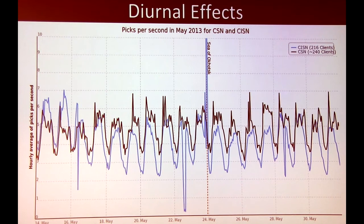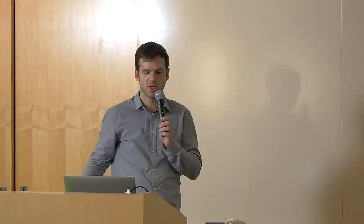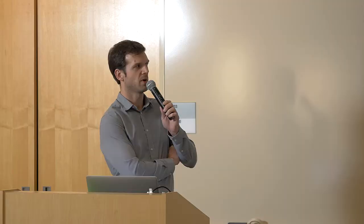Even our base load is incredibly diurnal. Two graphs comparing a home sensor and an office sensor based on pick frequency throughout the day show very different patterns — the office sensor lights up like a Christmas tree Monday through Friday between roughly 8am and 5pm, while the opposite is true for the home sensor. We need to account for this in our algorithms when estimating pick probability, and also in server load provisioning.